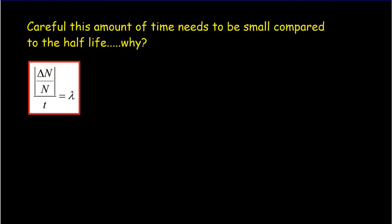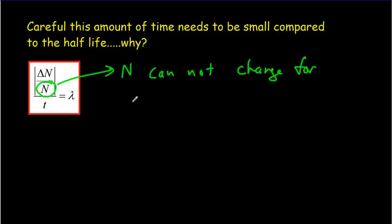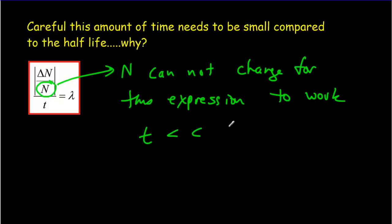We have to be a little careful when using this definition of lambda, because we're assuming everything in the equation is constant. The number of particles will change if you wait too long. If you wait for a period of time significant compared to the half-life, then N is going to change and won't be constant. So N cannot change — meaning t has to be much less than the half-life for this equation to be used successfully.